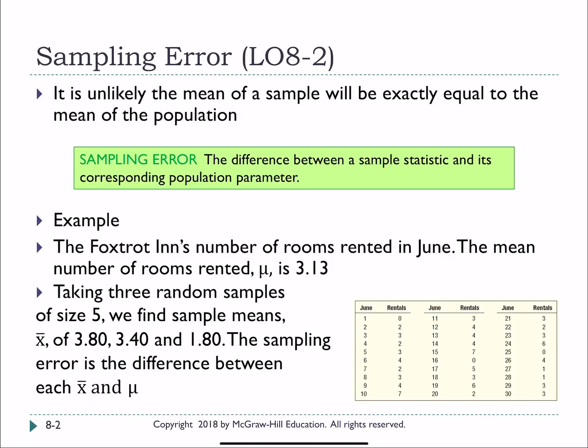So I'm going to move us forward to Learning Objective 2 on sampling errors. While we do hope that our sample is a good representation of our population, it is very unlikely that it's an exact representation. So it's unlikely that the mean of the sample will be exactly equal to the mean of the population. Due to that, we have what is called a sampling error. The difference between our sample statistic and the corresponding population parameter that it's supposed to be representing.